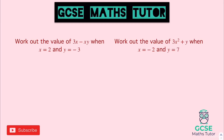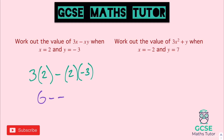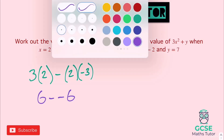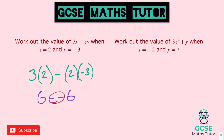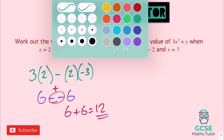Here are the answers. For 3x − xy with x = 2 and y = negative 3: we have 3 lots of 2, take away 2 multiplied by negative 3. So 3 lots of 2 is 6, take away 2 lots of negative 3, which is negative 6. We get a double negative, so that turns into a plus: 6 plus 6, which is 12.